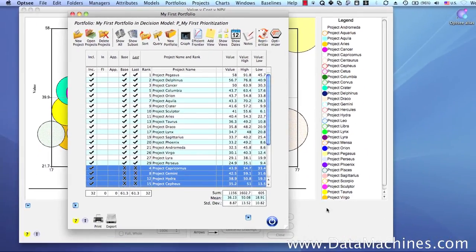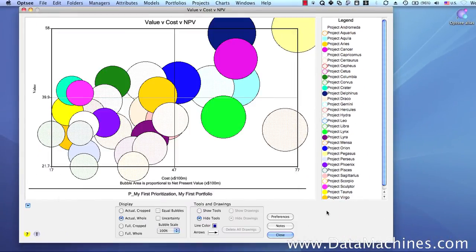And now we can return to the Bubble Chart form and we can see that the projects with the solid colors were the ones that were selected by the optimizer, and the projects with the pattern color were the ones that were rejected.